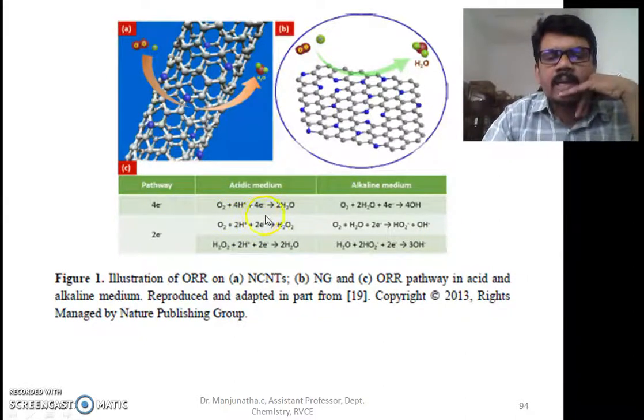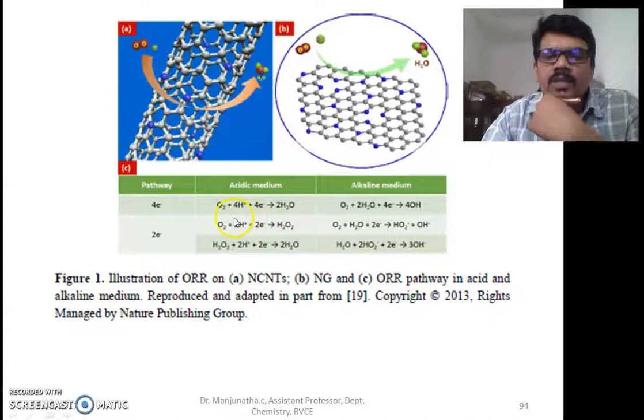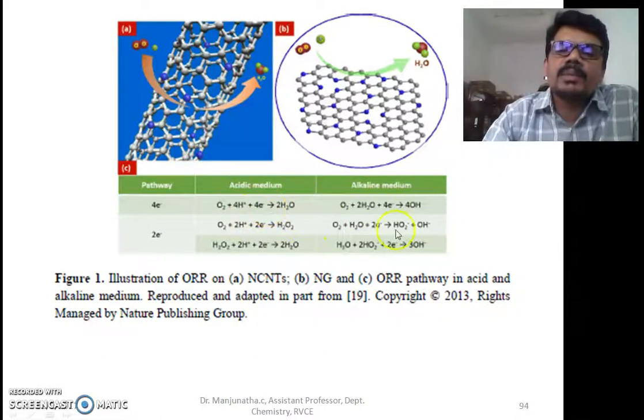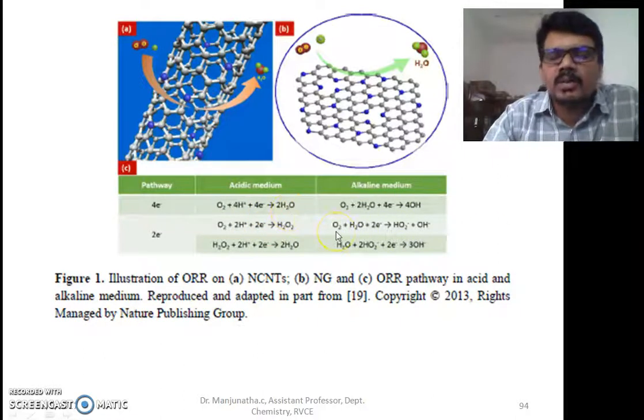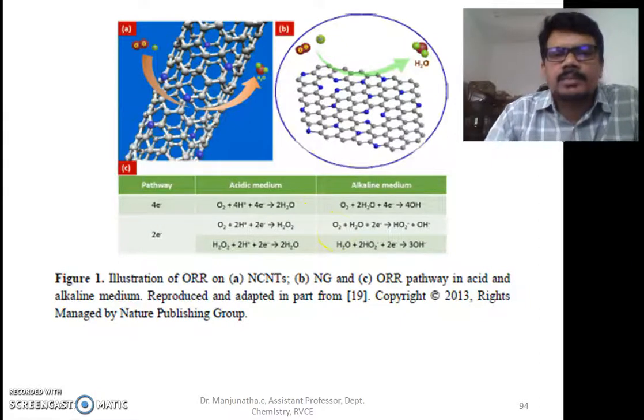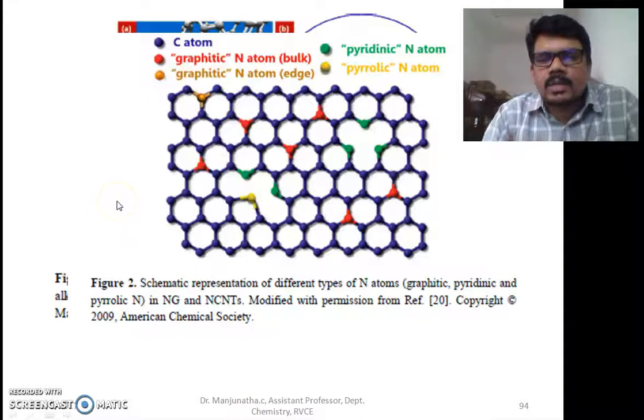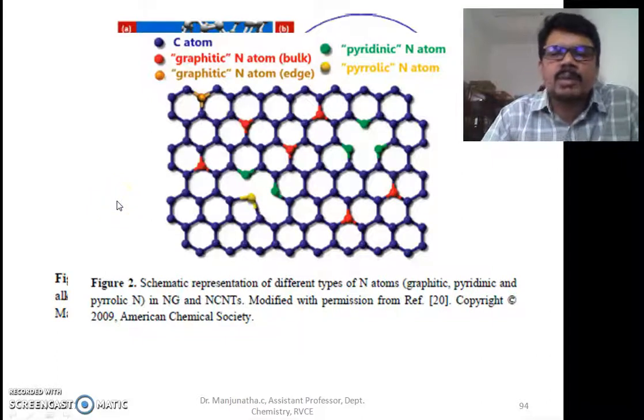This is the application of nitrogen-doped carbon nanotubes used for oxygen reduction reaction. This helps in reduction of oxygen in acidic medium: O2 + H+ accepts electrons to form water. This is a very famous cathode reaction that we study in most batteries and fuel cells.